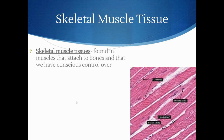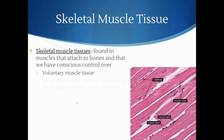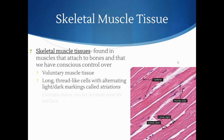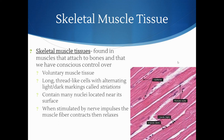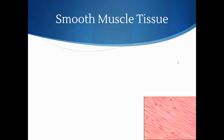Skeletal muscle is found in muscles that attach to bones and is under conscious voluntary control. It provides voluntary movement and has long thread-like cells with alternating light and dark markings called striations. There are many nuclei located near its surface and a lot of mitochondria for producing the energy needed to contract. When stimulated by nerve impulses, the fibers contract then relax. The key features of skeletal muscle are that it is striated and under voluntary control.